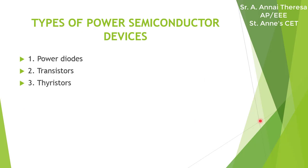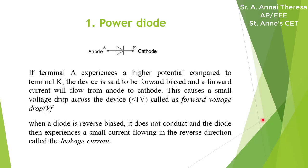Generally, we can classify power semiconductor devices into three types: one is power diodes, second one is transistors, and third one is thyristors.